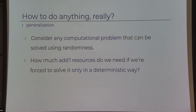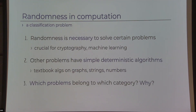What comes out of this question is a classification problem. It's clear that for some problems, we must use randomness — like cryptographic protocols that are secure, or algorithms running in sublinear time when the input is too large to read. But other problems are easy: I know how to add two numbers without randomness in a simple, fast way. We have many problems with textbook algorithms that don't use randomness at all.